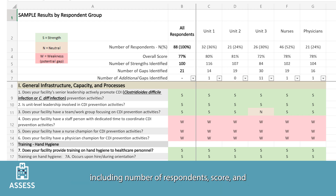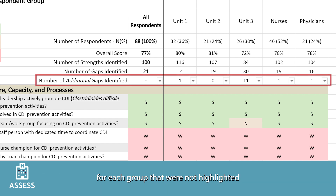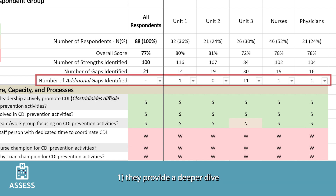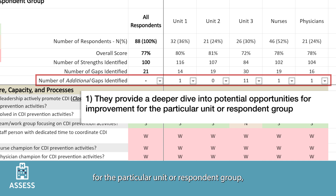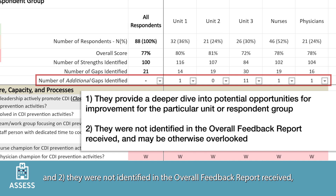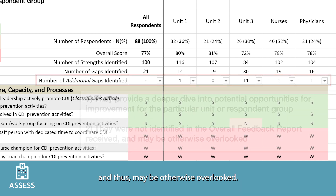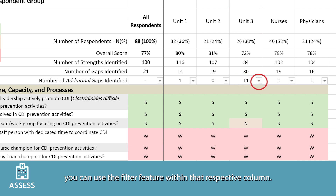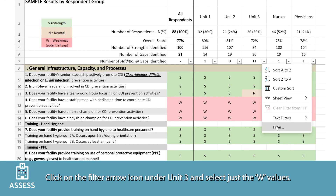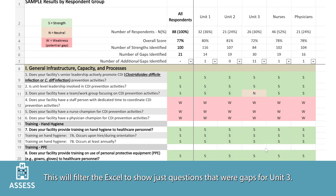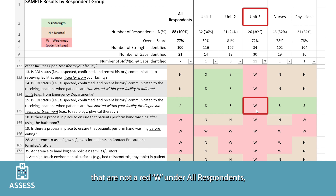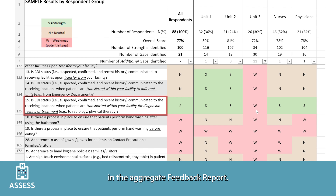The rows directly under each column header provide summary information, including number of respondents, score, and number of strengths and gaps identified. The number of additional gaps indicates gaps for each group not highlighted in the overall feedback report, which are helpful because they provide a deeper dive for the particular unit or respondent group and may otherwise be overlooked. For example, unit 3 has 11 additional gaps. To examine these, use the filter feature in that column, select just the W values, and scroll down to see which items are gaps for unit 3 but not for all respondents.